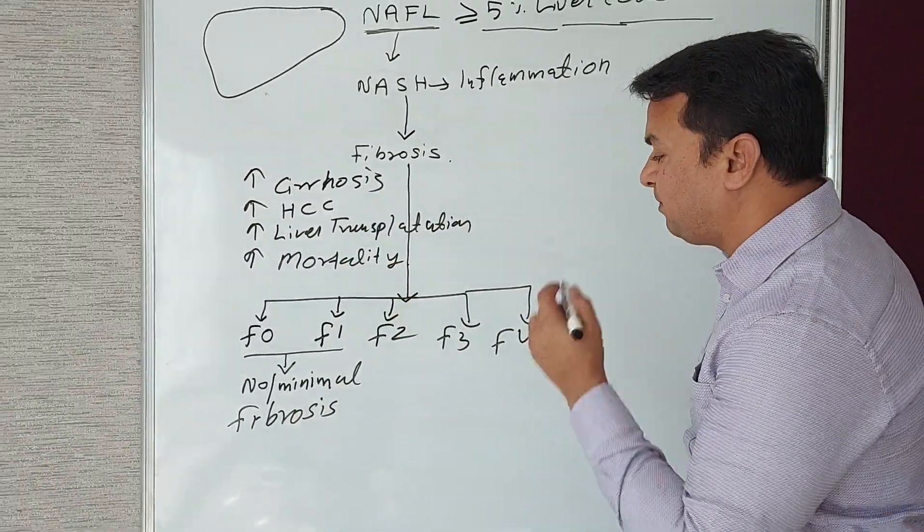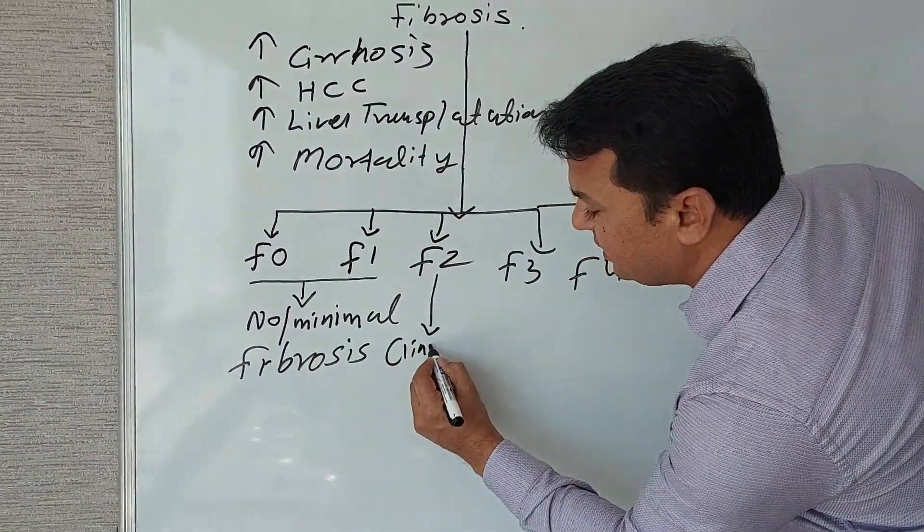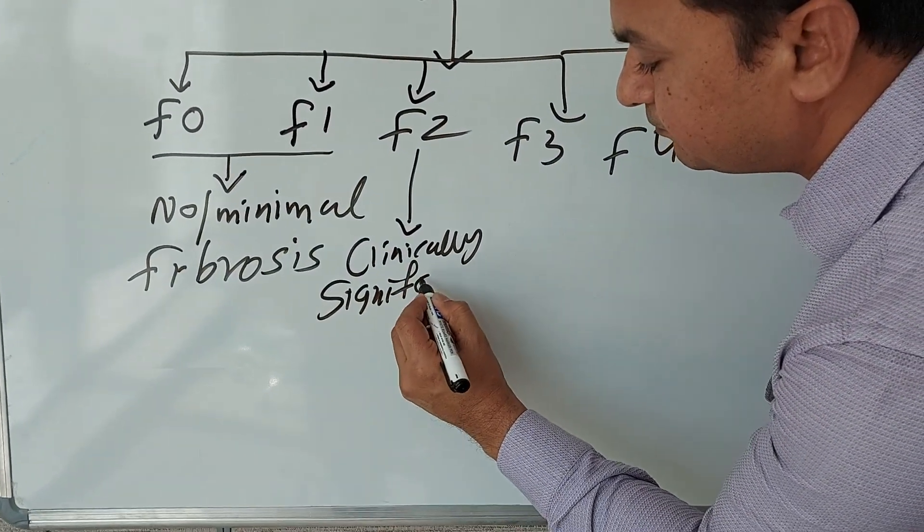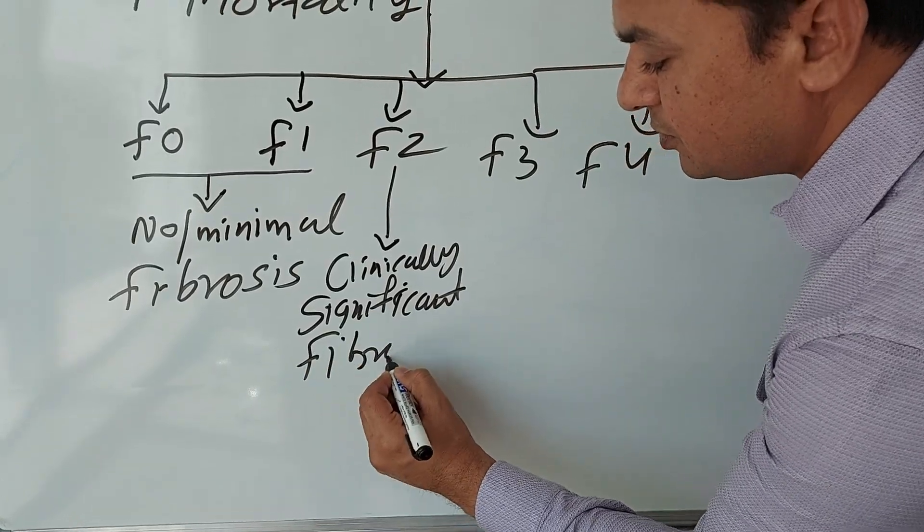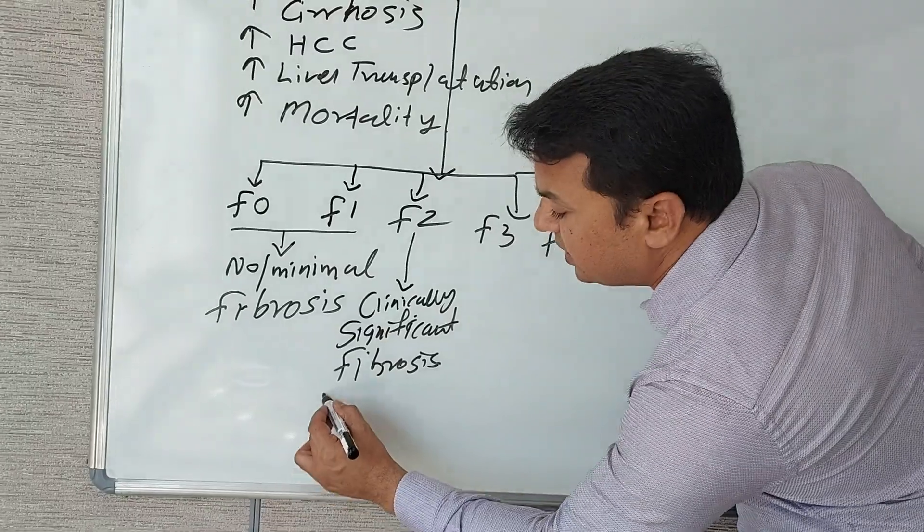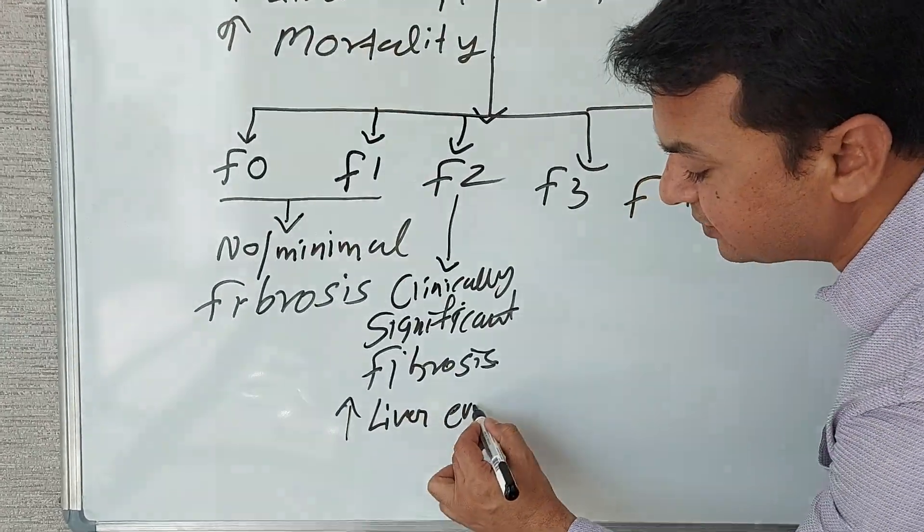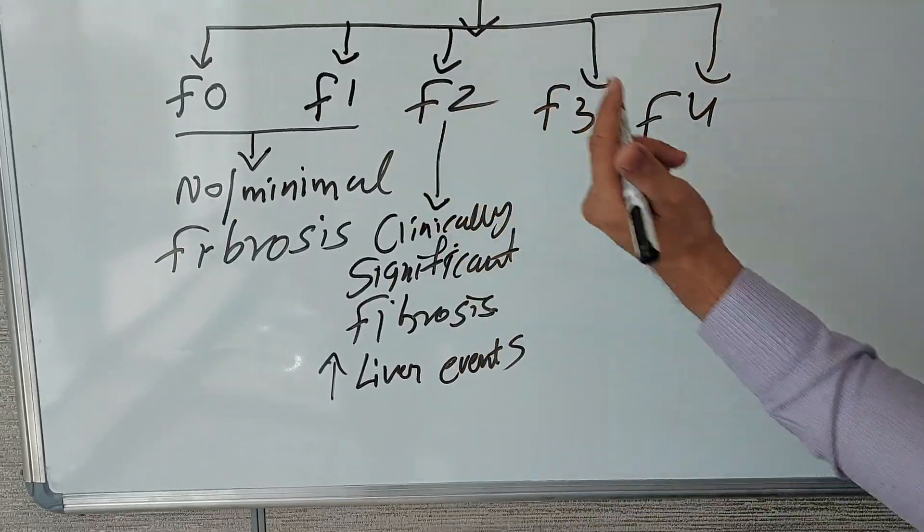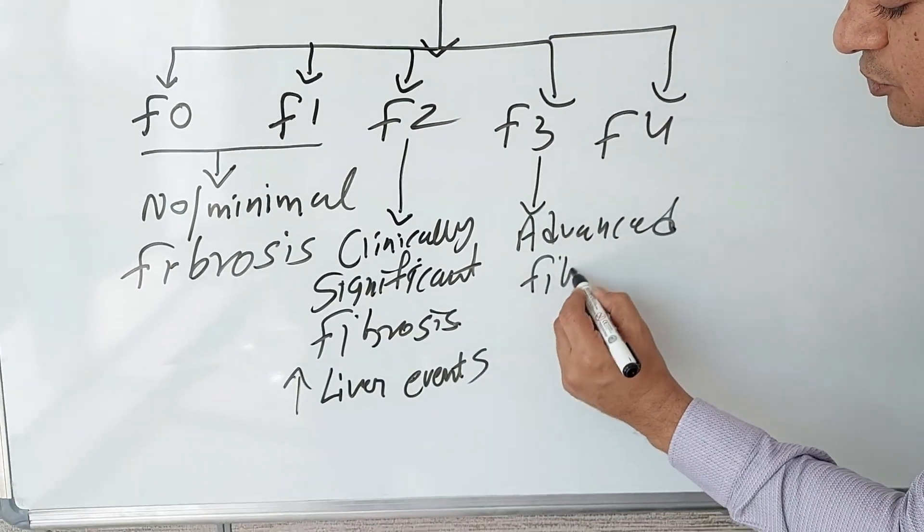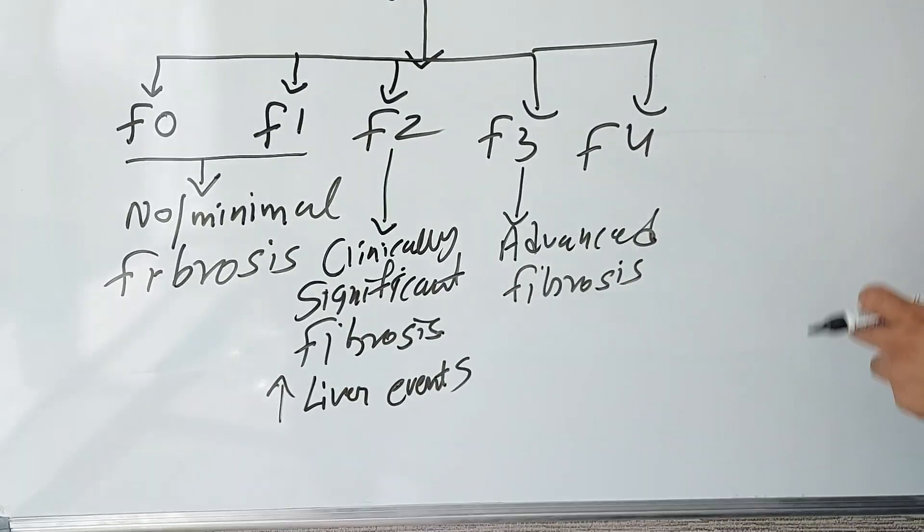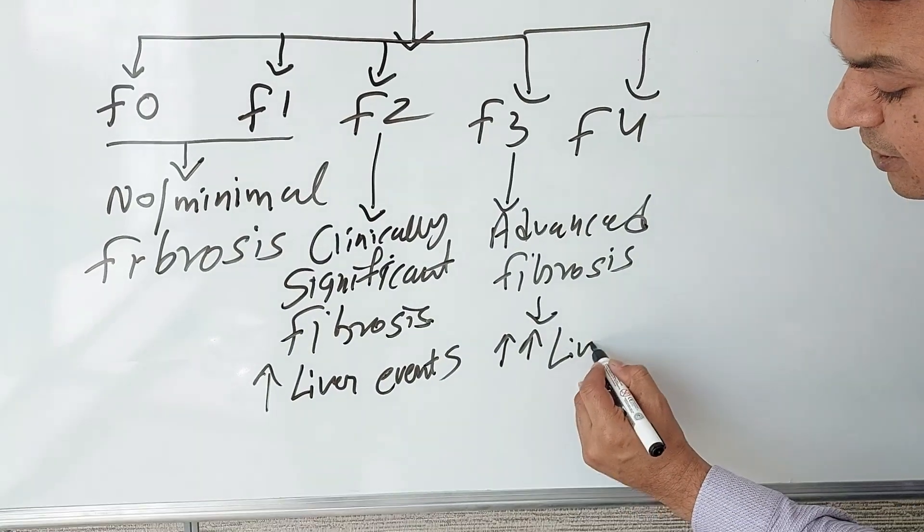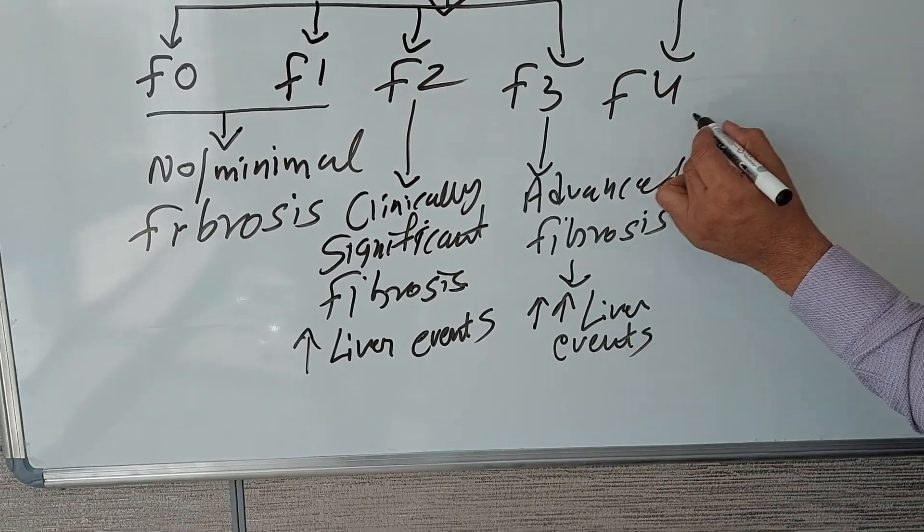pressure, and so forth. F2 means clinically significant fibrosis—that means significant fibrosis has already taken place and there is an increased risk of liver-related events in that group of patients. F3 means advanced fibrosis—that means the